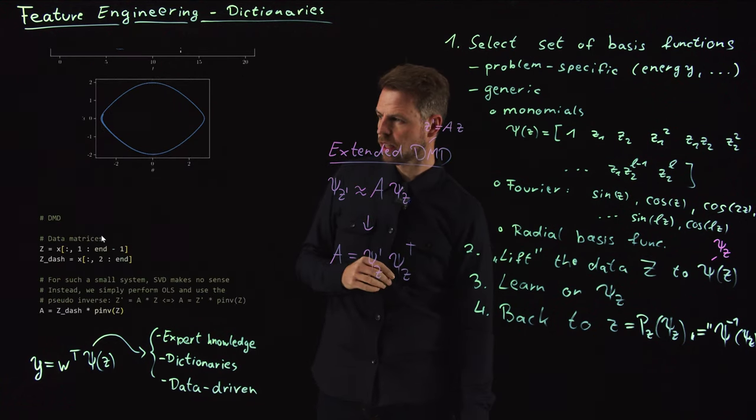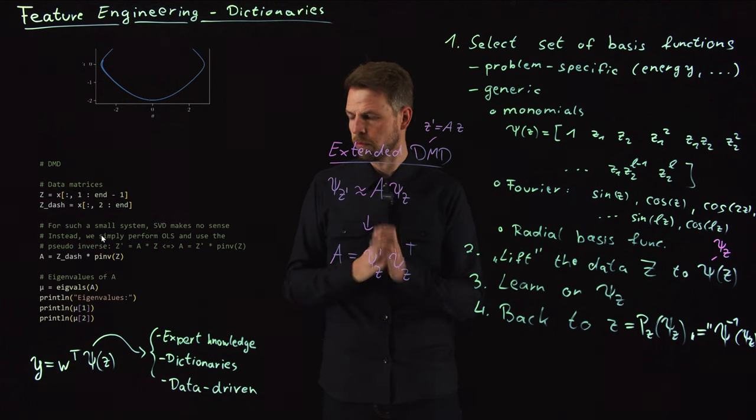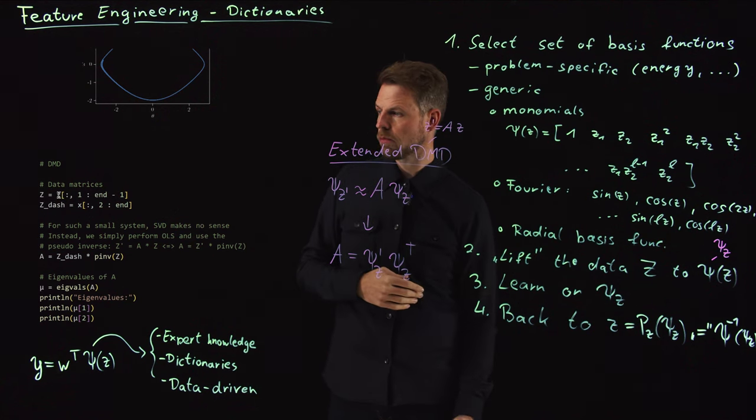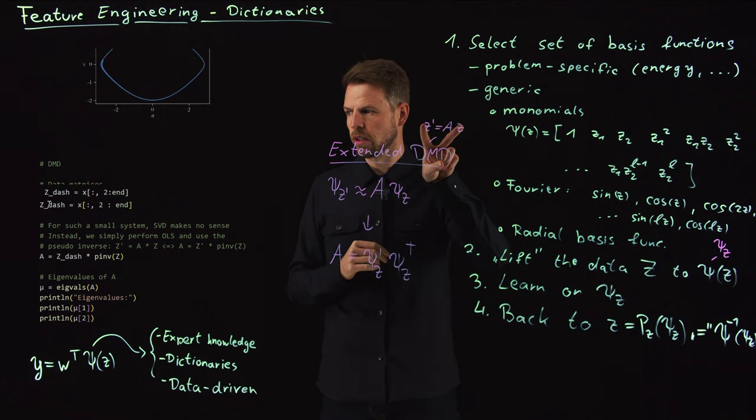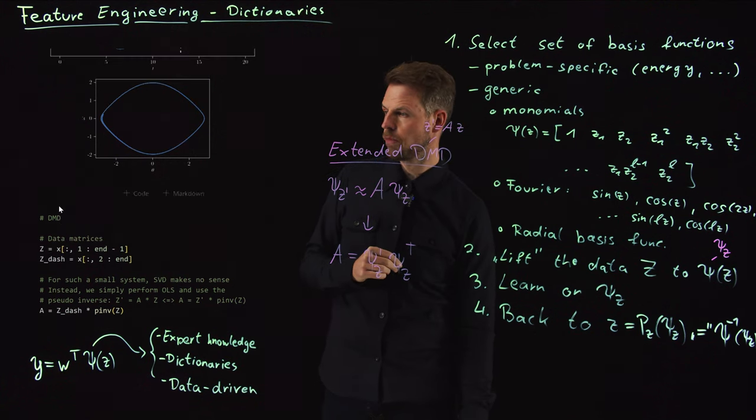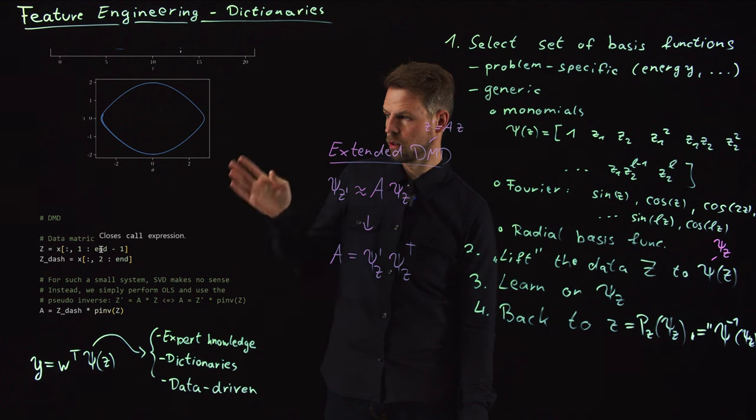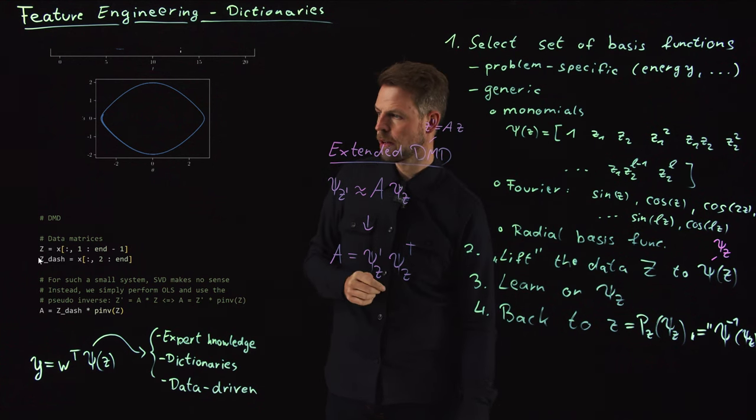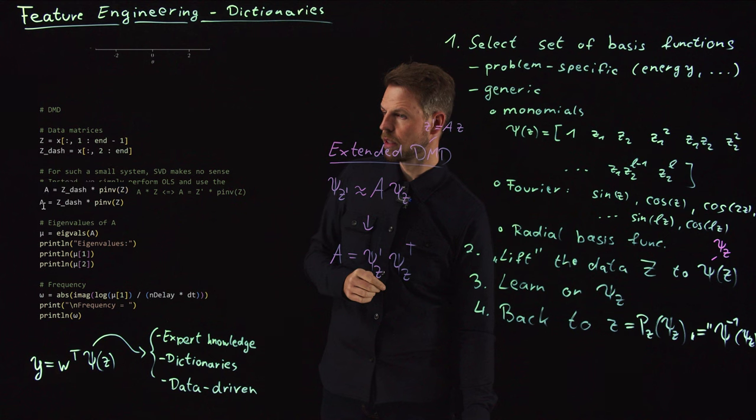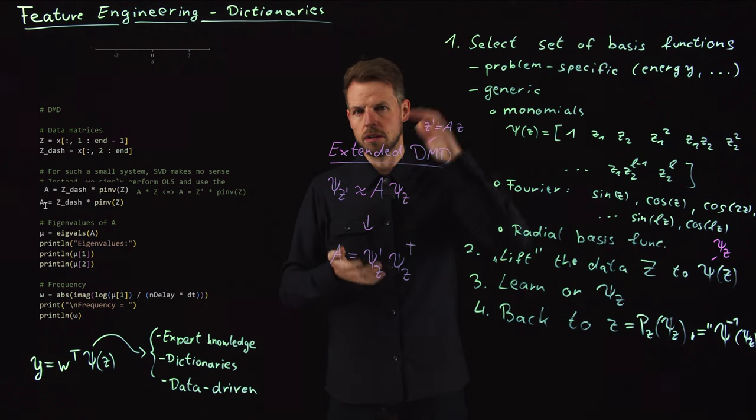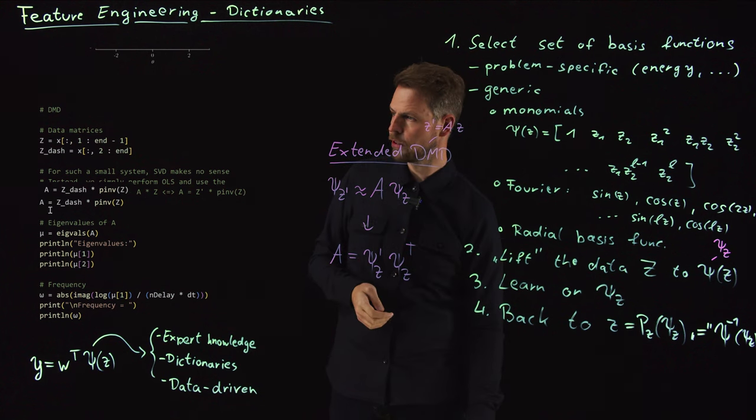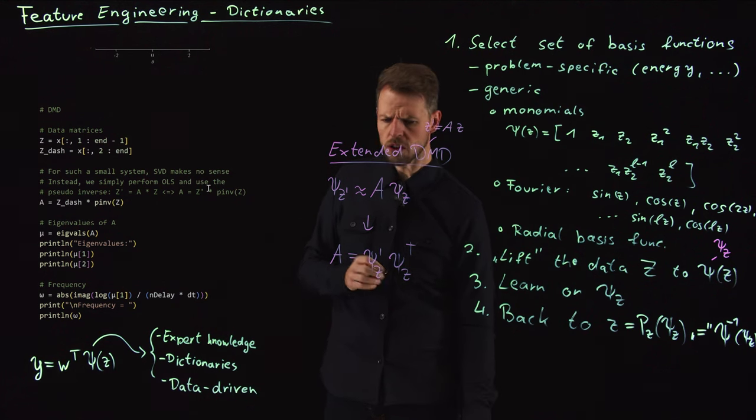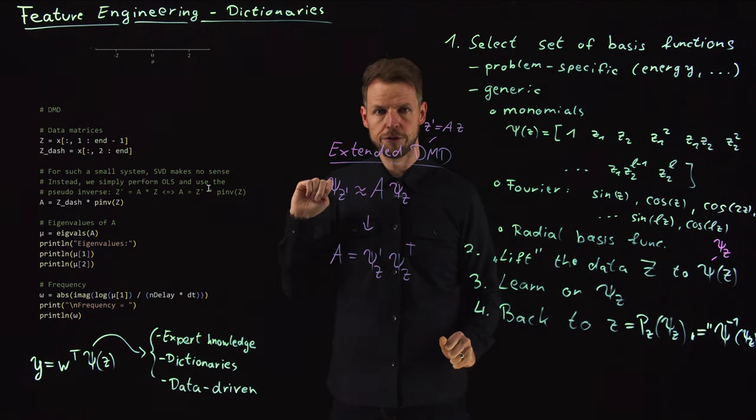And so what I can do now is I can anyways use my standard DMD algorithm. So I have stored my trajectory in this x vector, and I'm defining z and z dash exactly as I did here. So what I'm doing is I'm taking z to be the first n minus one entries, and then z dash, again, n minus one entries but shifted by one time step. And so learning the matrix A, and I'm not going to use the SVD-based reduction here because I don't need it for two-dimensional states. It's just an ordinary least squares identification, if you wish. So exactly the formula that I've written here, but not on a feature space here.